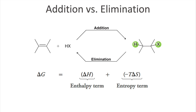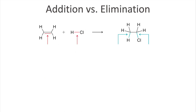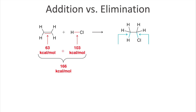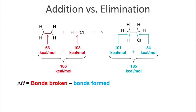Whether the forward or reverse reaction is favored depends on these two terms. Let's take the example of ethene reacting with HCl — adding H and Cl across that double bond. We are breaking the pi bond and the HCl bond to form two new sigma bonds: H to carbon and Cl to carbon. From reference values, the bonds broken on the reactant side are worth 166 kcal/mol, while the bonds formed on the product side are worth 185 kcal/mol.